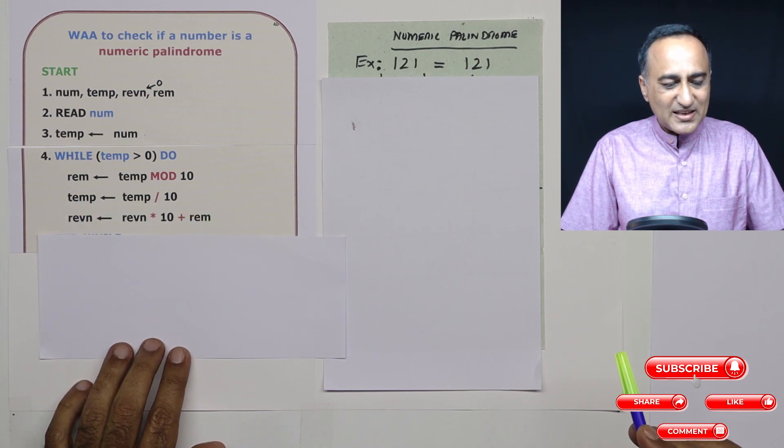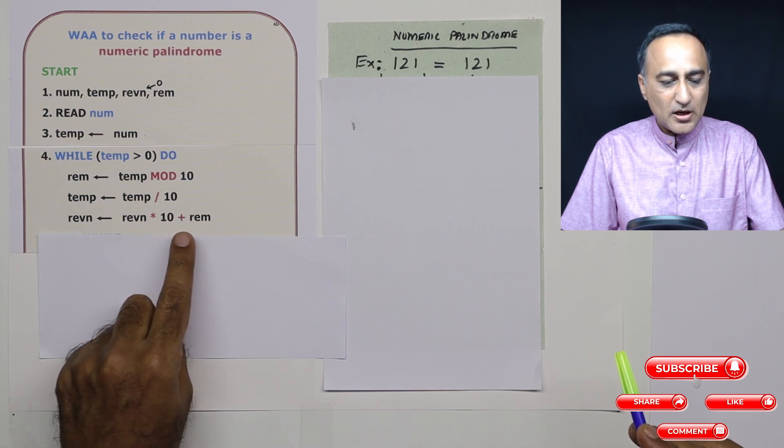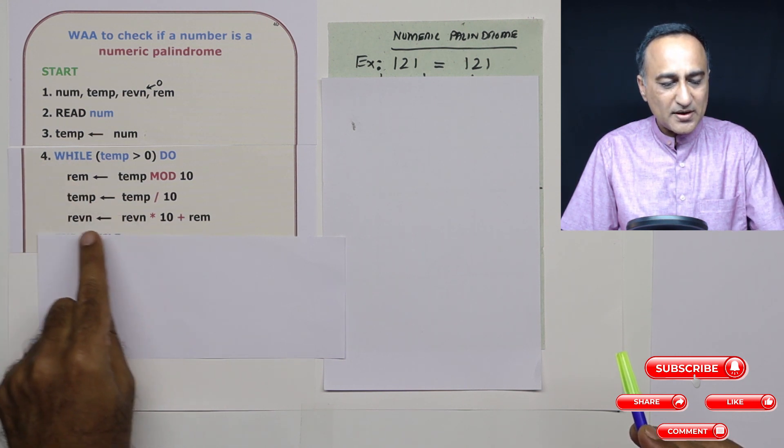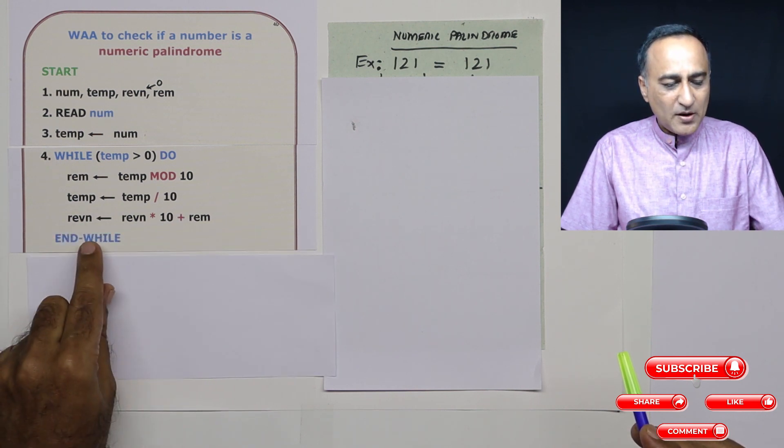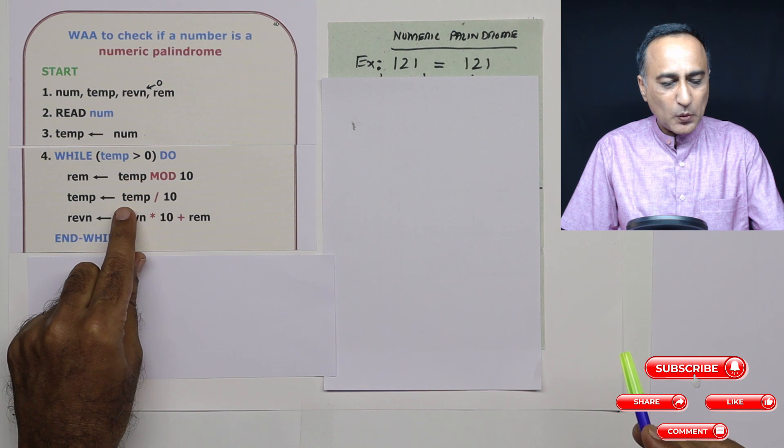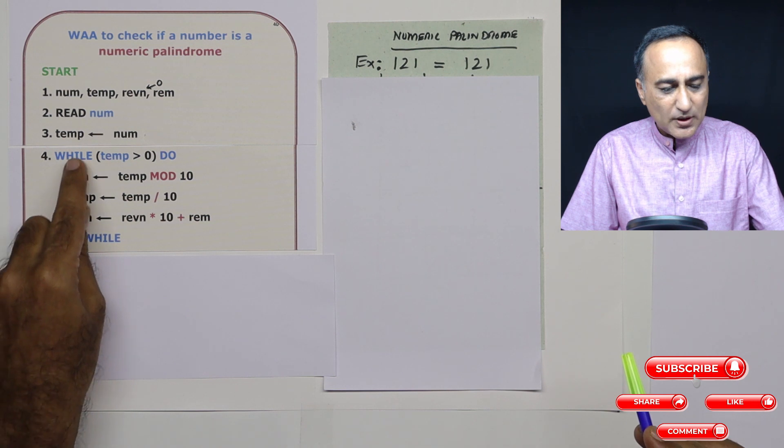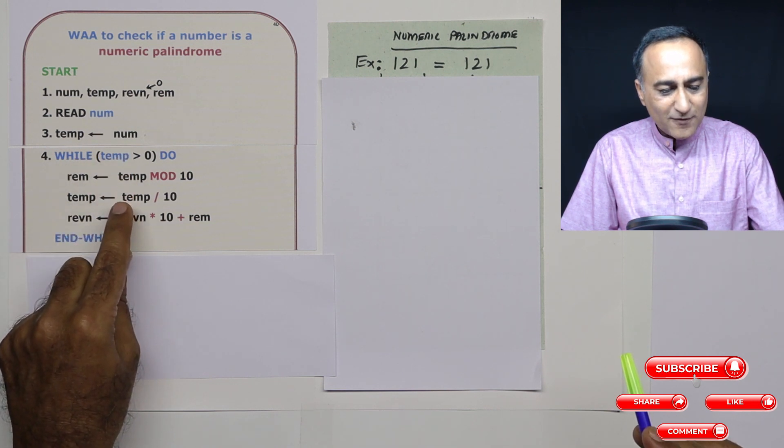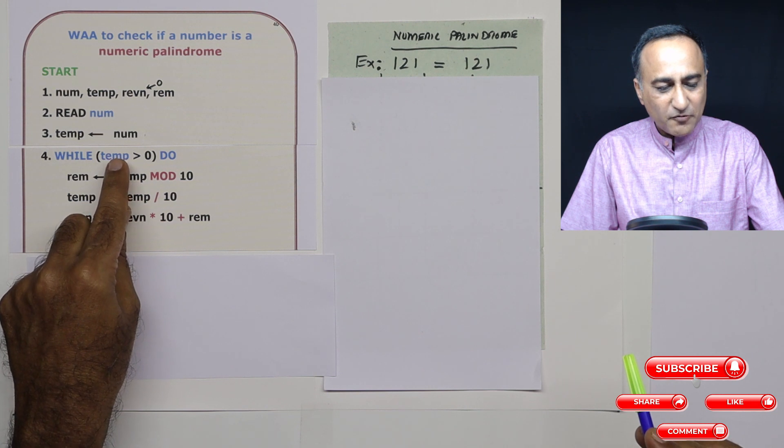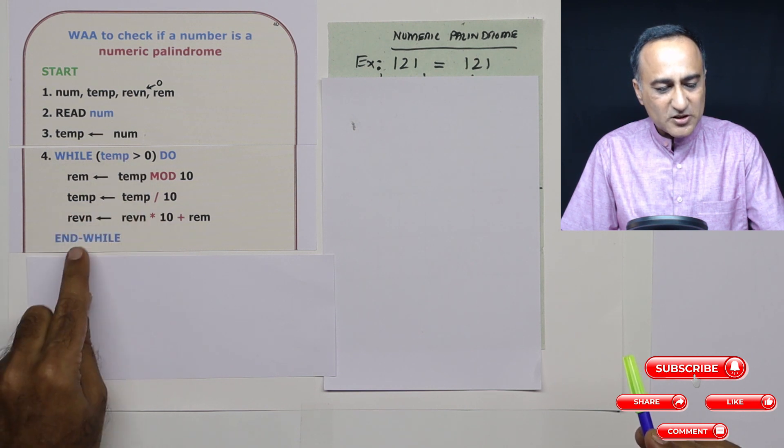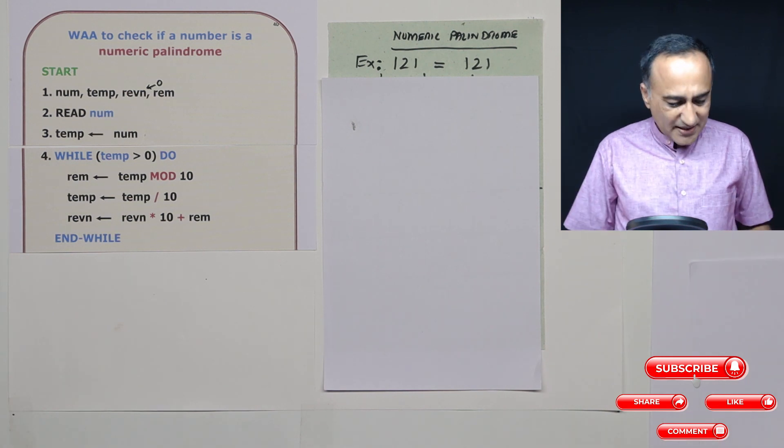Then reverse number was zero. Initial value was zero. Zero times 10 is zero, plus remainder at this stage was 1. So reverse number became 1. Now my while loop ends. Temp had become 12. Is 12 greater than zero? Yes. So this process will continue till the value of temp becomes zero. At that point, when temp is zero, zero is not greater than zero, and I'm going to come to the end of this loop. Once I come to the end of the loop, it's quite simple.